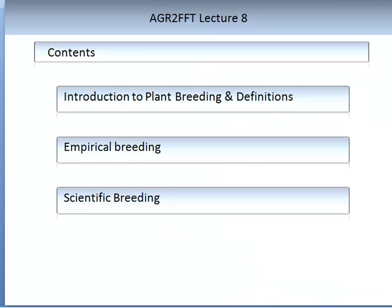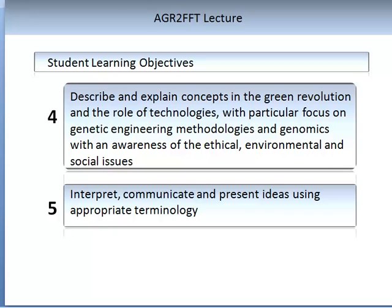Lecture 8 is part of the topic genetics. In this lecture you will be learning specifically about plant breeding. We will start with an introduction to plant breeding and associated definitions. We will then describe empirical and scientific breeding technologies. Please note, this lecture is a simple introduction to some of the commonly used technologies — it is not meant to be a conclusive overview of all plant breeding technologies. This lecture allows us to explore student learning objectives 4 and 5, concentrating on the basis for the genetic engineering methodologies. You will also learn some appropriate terminology in this lecture.